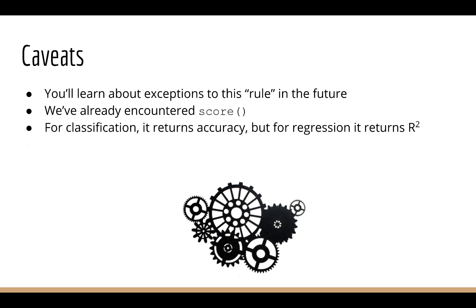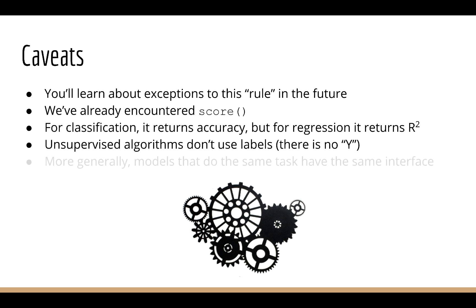In later courses, you'll see that unsupervised machine learning methods don't use labels, and so they're going to have a different interface than what we saw here in this course. But importantly, they have the same interface as each other. So a more general rule might be, models that do the same task have the same interface.